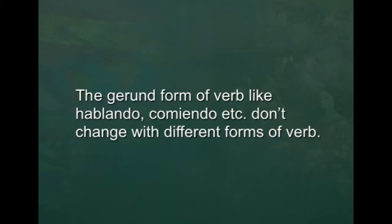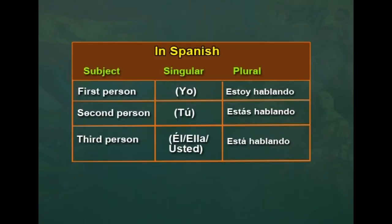You may be thinking whether the gerund forms of verbs — that is, -ando and -iendo — change with different forms of the conjugated verb or not. The gerund form of verbs like hablando, comiendo, etc. do not change with different forms of verb. It remains hablando, comiendo, and only the conjugation of the estar verb changes. Por ejemplo: yo estoy hablando, tú estás hablando, él/ella/usted está hablando. You can see that only estar is changing, not the gerund form hablando.